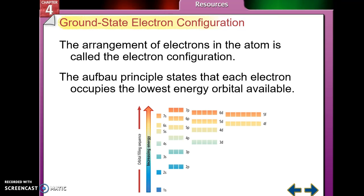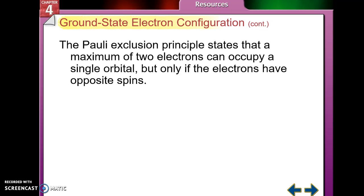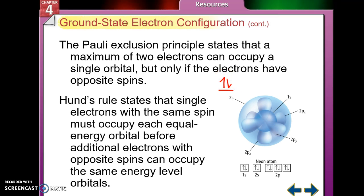The Pauli exclusion principle states that you can only have two electrons in an orbital, and they must have opposite spins. Hund's rule — which I call the 'church pew rule' — states that single electrons with the same spin must occupy each equal-energy orbital before additional electrons with opposite spins can occupy those orbitals. So if you have a P orbital with only 3 electrons, you put one in each orbital before pairing them up.